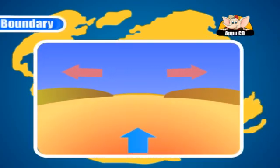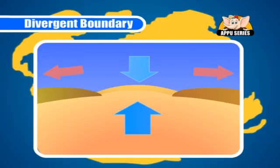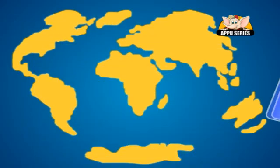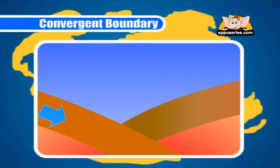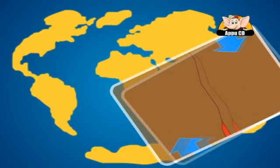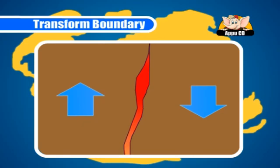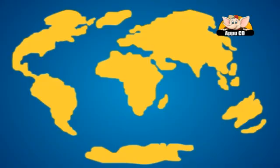There are different types of boundaries created by different plate movements. Divergent boundaries are where plates are moving apart and new crust is created by liquid rock pushing up from the mantle. Convergent boundaries are where plates are moving towards each other, and sometimes one plate sinks or is subducted under another. Transformed boundaries are where plates are moving past each other and cause friction.